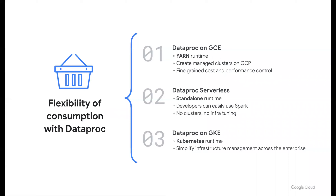We talked about some of the product integrations — there are a couple others I missed, such as Cloud Composer, which is hosted Apache Airflow and lets you orchestrate Spark jobs on whatever cadence you may need. Let's briefly talk about what we call the flexibility of consumption with Dataproc. All of the stuff I'm talking about is Google Cloud's take — the other cloud providers have their own takes on this as well, with naturally some overlap. Dataproc is the place you go to for managing all the different ways to approach Spark on Google Cloud.